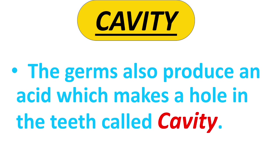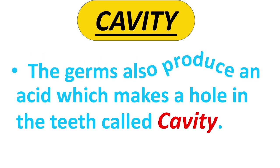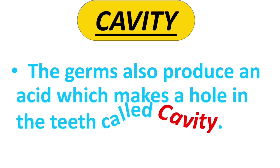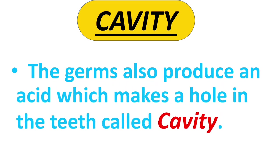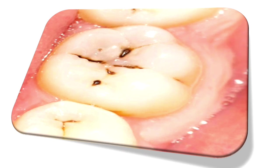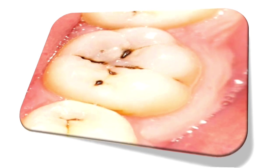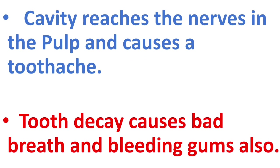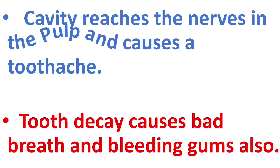Next is cavity. Cavities are small holes caused by a buildup of bacteria and acid on the tooth surface. See in the picture of teeth — you can see small brown color holes, i.e. cavities. If a cavity is not treated, then it reaches the nerves in the pulp and causes toothache. Tooth decay also causes bad breath and bleeding gums.